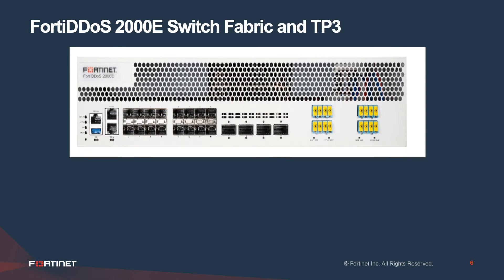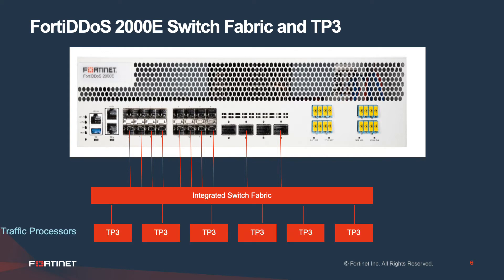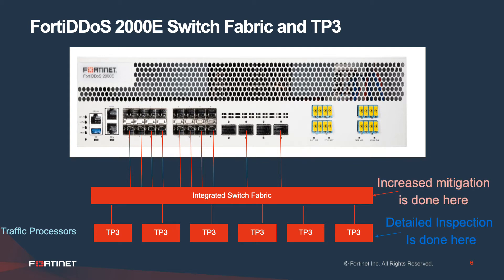It's also important to understand how the switch fabric is connected to TP3s in the FortiDDoS 2000E and 1500E models. The inbound front panel interfaces are connected to the integrated switch fabric, which in turn is connected to the TP3s — the traffic processors, also called SPUs. The TP3s do the detailed inspection, and once it is decided that the attack is large, it is offloaded via distress ACL rules to the integrated switch fabric where the increased mitigation is done, while detailed inspection continues in the TP3s.